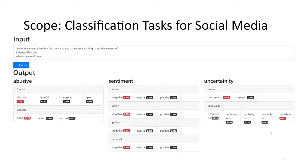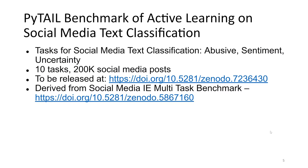For this talk, our scope will be around classification tasks for social media, mainly abuse detection, sentiment classification, and uncertainty quantification. In order to support research in this area, we released the PyTL benchmark of active learning for social media text classification. It consists of 10 datasets comprising the tasks of abuse detection, sentiment classification, and uncertainty quantification, and together these cover around 200,000 social media posts.